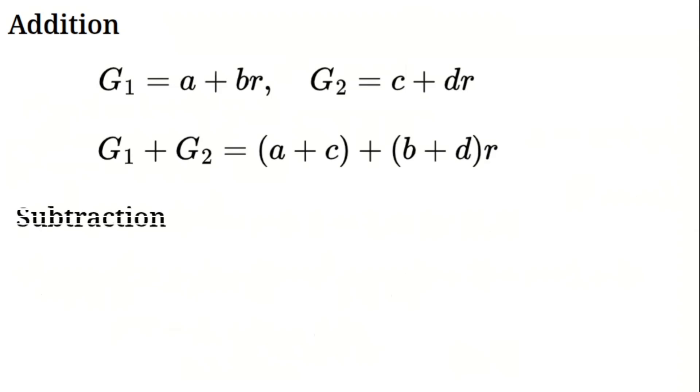Subtraction's up next. For subtraction, take G1 minus G2. That's a minus C plus B minus DR. We subtract real parts and golden parts separately. Geometrically, from AB, we move backward by CD to A minus C, B minus D. Now let's multiply.